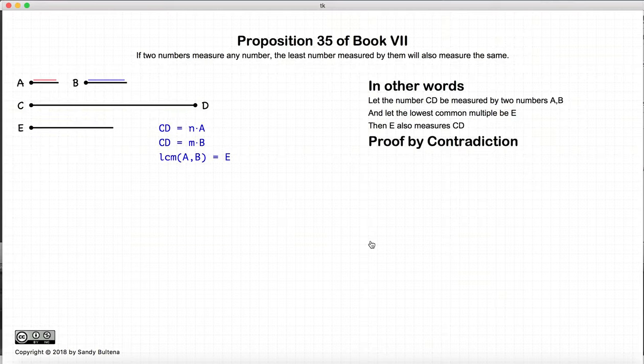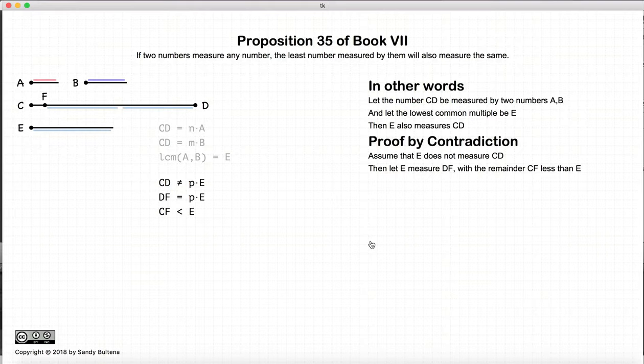So to prove this, we are going to do it by contradiction. So we are going to assume that CD is not measured by E. So let DF be a number that is measured by E, and the remainder of the line CD, in other words CF, be less than E.